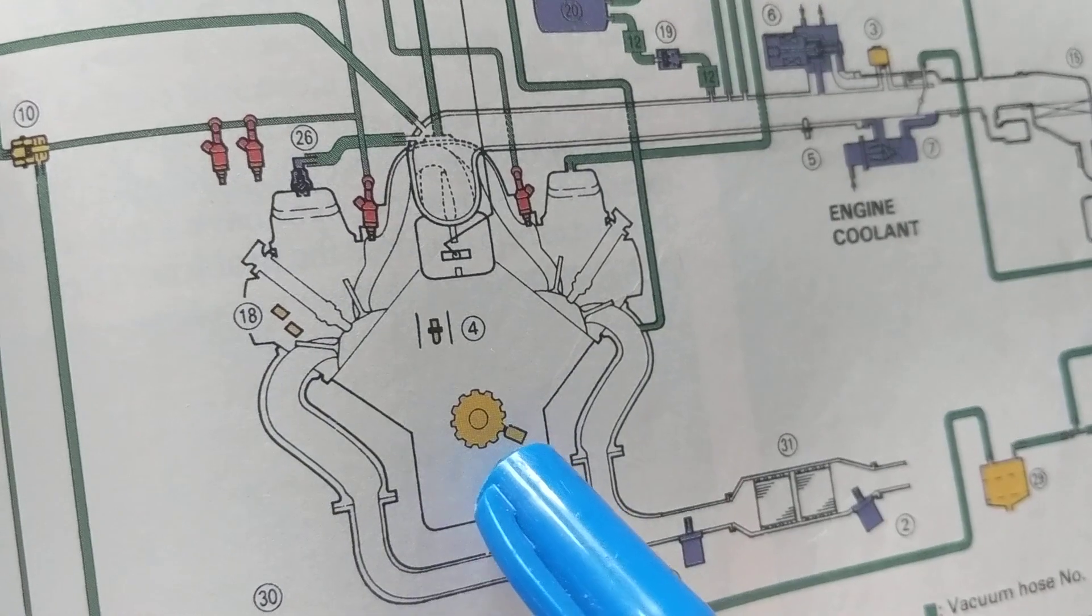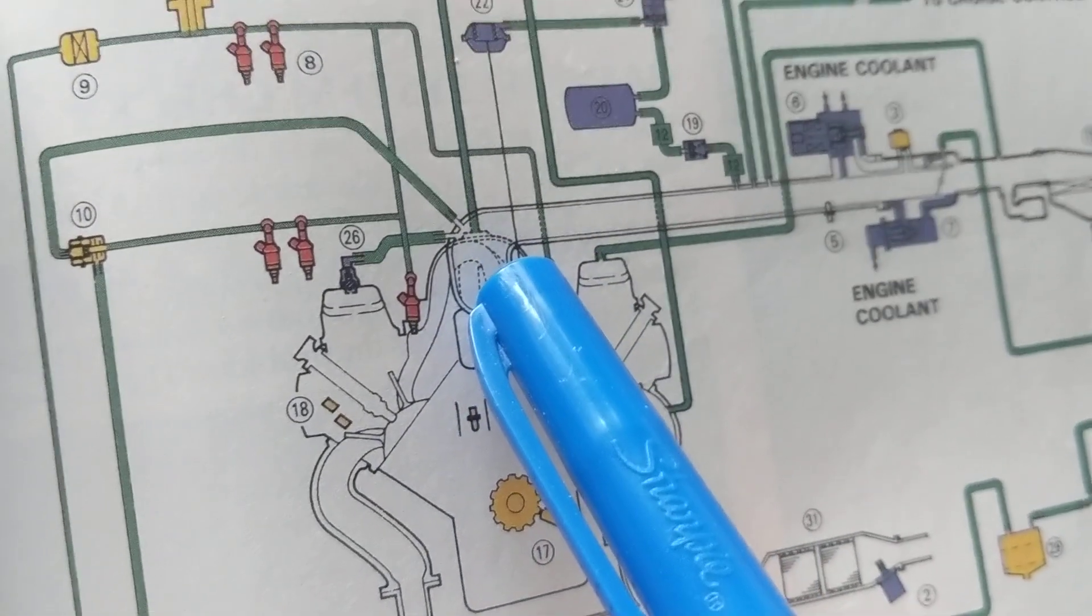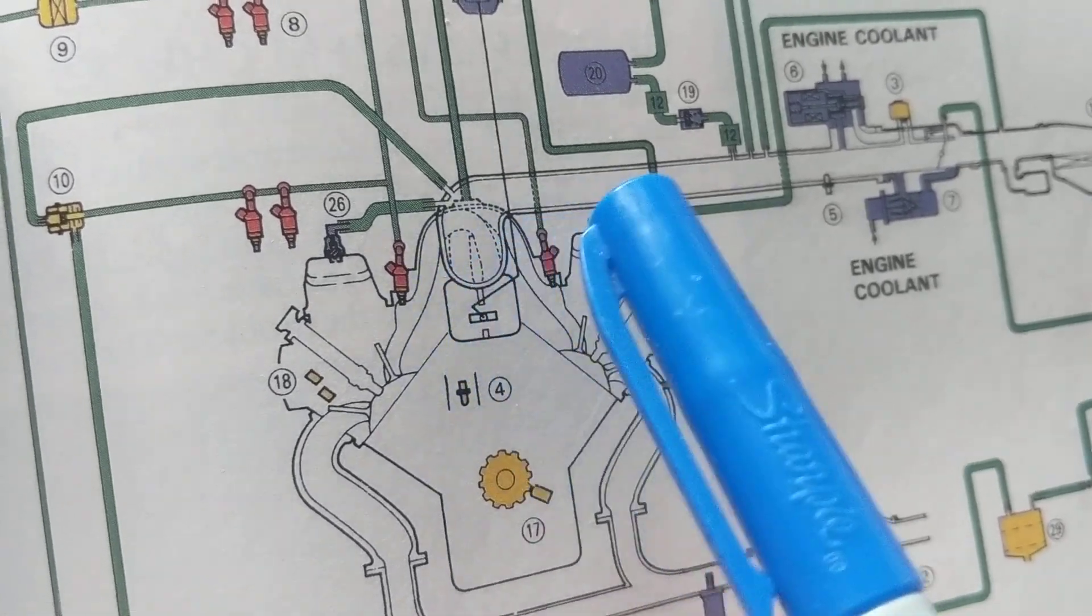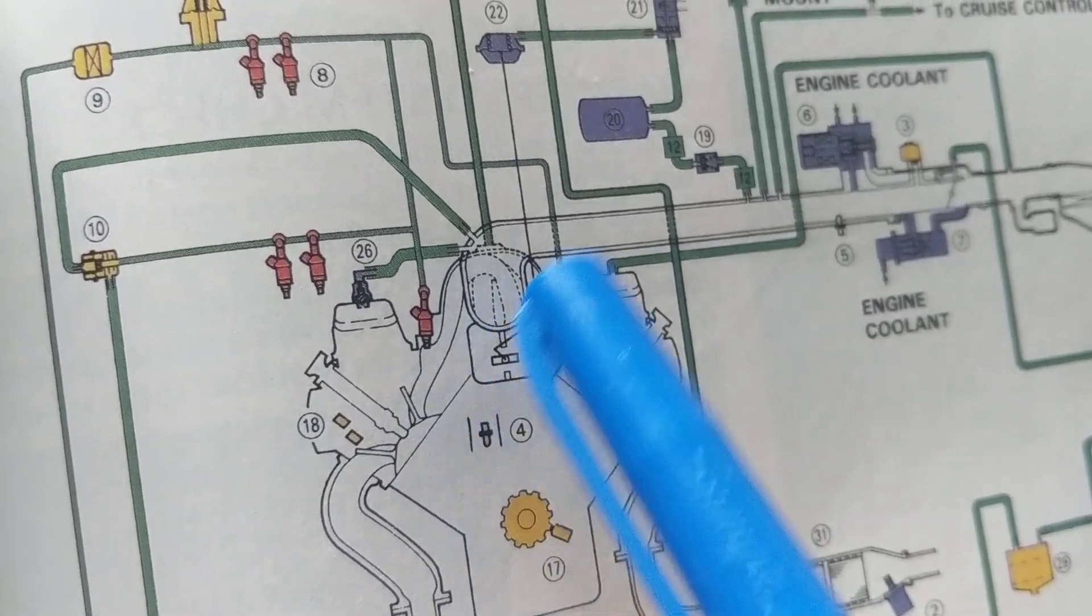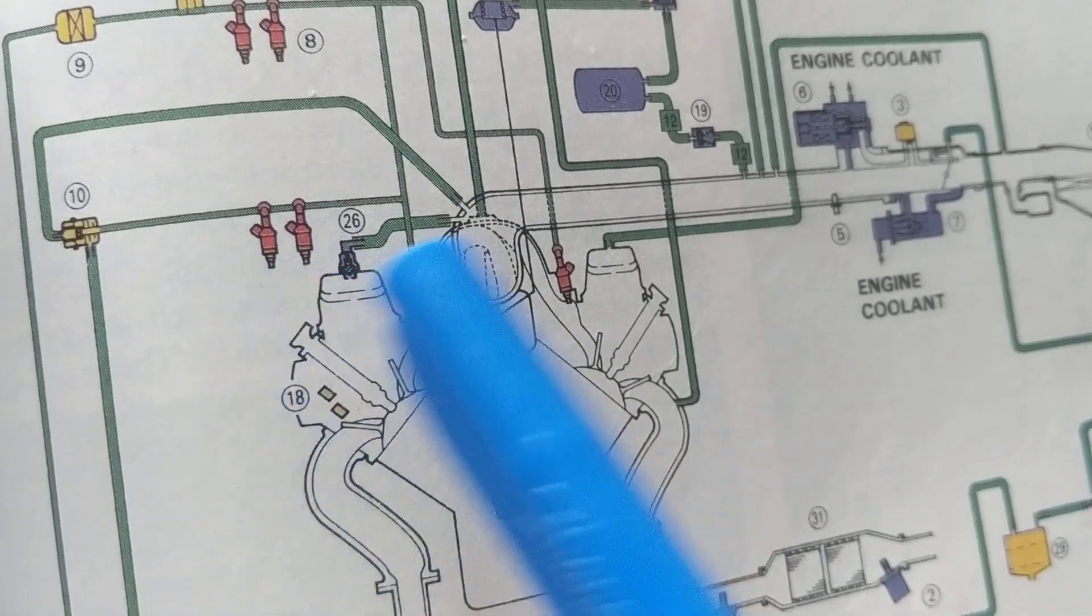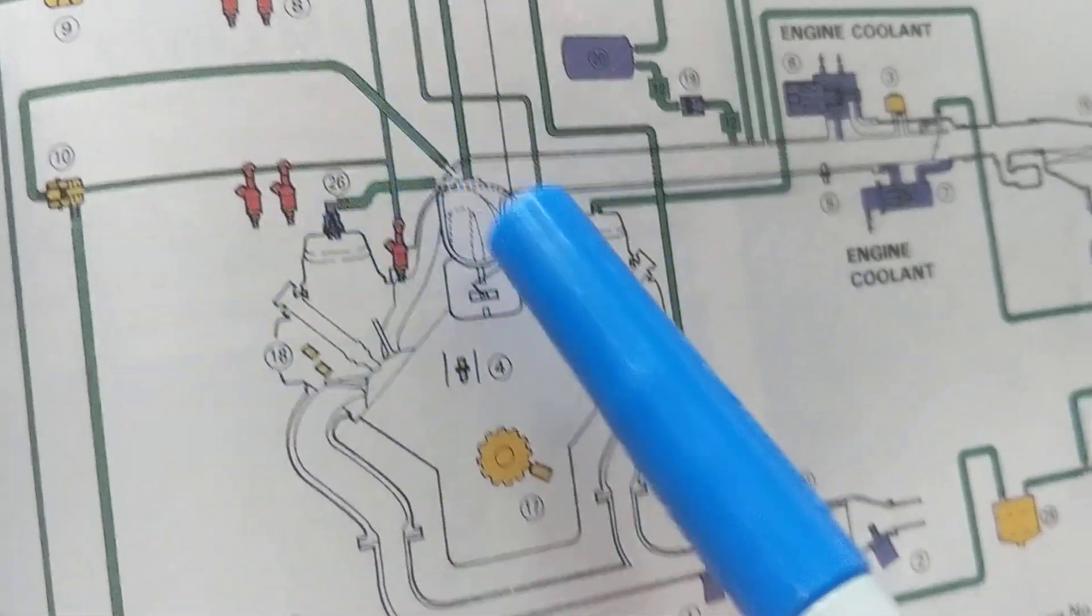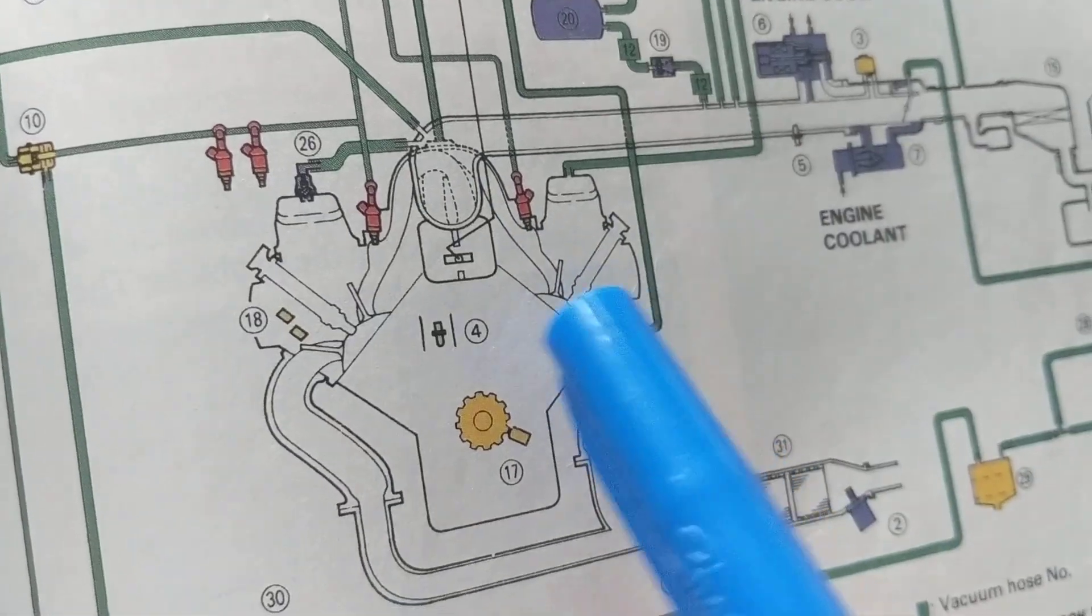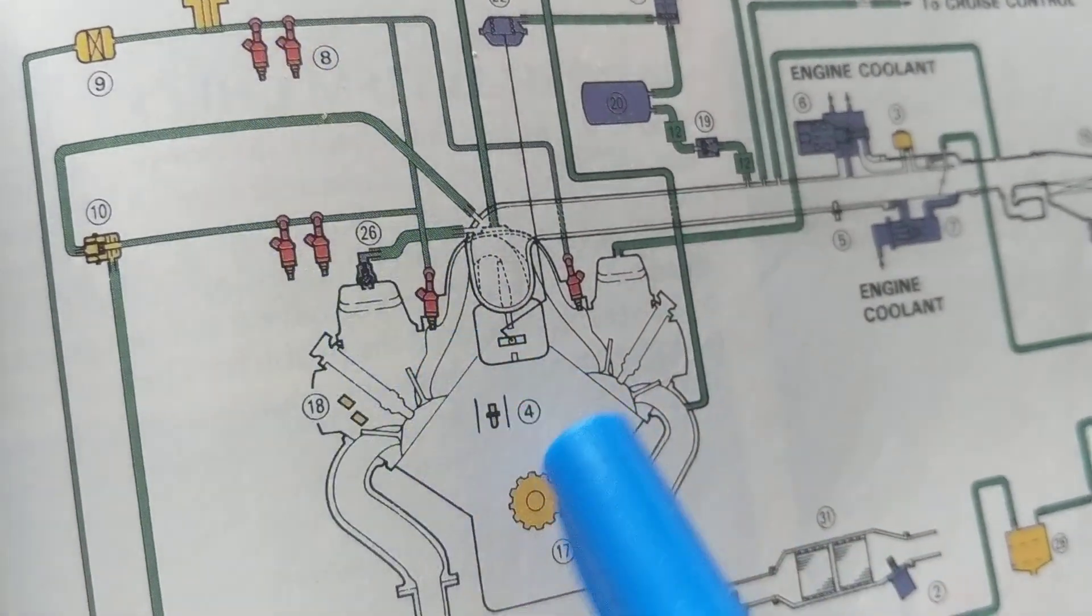Because when that piston comes up, it compresses that air-fuel ratio. The more the compression, the better the outcome and combustion. These are the fuel injectors. If you have a V6, you'll have six. If you have a four cylinder, you'll have four. If you have a V8, you'll have eight. One in each cylinder.